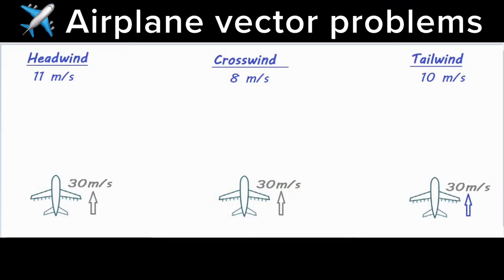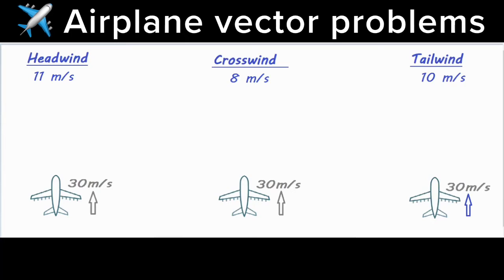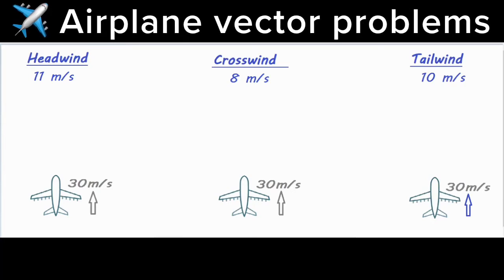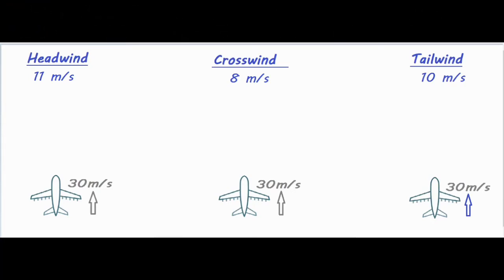In this video I'm going to be talking about how to solve three different vector problems involving an airplane with a headwind, crosswind, and tailwind. Before we get started, we want to make sure we're aware of what each of these are, and also know the method of adding vectors so that we can get our final answer of what the resultant velocity would be.